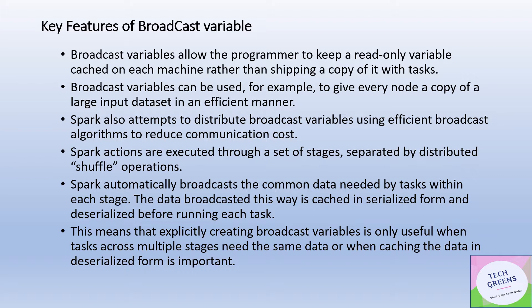Let's understand one scenario to help us understand the utility of broadcast variables. All the Spark actions are executed through different sets of stages, and these stages are separated by a shuffle — that's a stage boundary for any Spark execution. Across the shuffle, the Spark engine automatically copies the data on the nodes required for running across different tasks in a serialized form. This means that explicitly creating broadcast variables is only useful when tasks across multiple stages need the same data, or when caching the data in deserialized form is important.